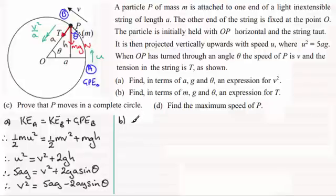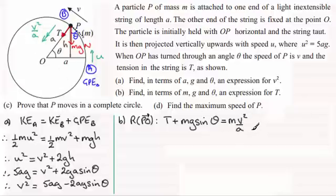So what we're going to do next is resolve in the direction of P to O. And if we do that, all of T acts towards the centre. And then we've got the component of the weight acting towards the centre, that's MG sin θ. And that's going to be equal to the mass times the acceleration, M times V²/A.